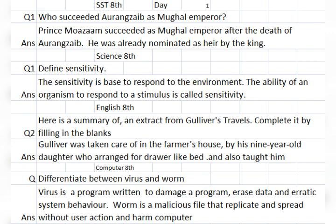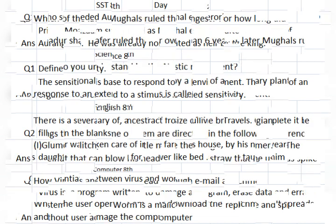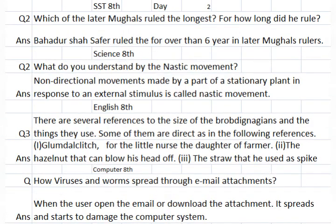English Class 8: Here is a summary of an extract of Gulliver's Travels. Complete it by filling in the blanks. Gulliver was taken care of in the farmer's house by his nine-year-old daughter, who arranged a drawer-like bed and also taught him.